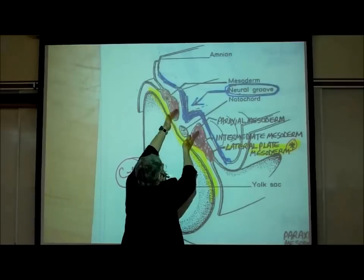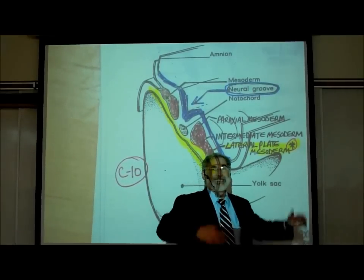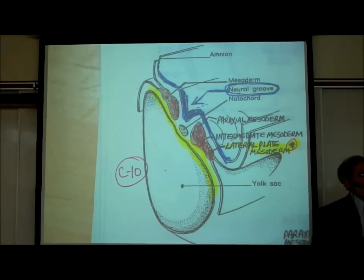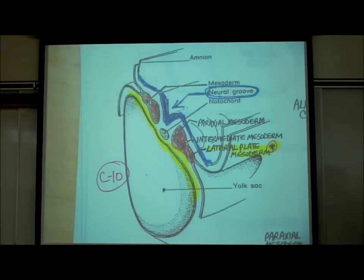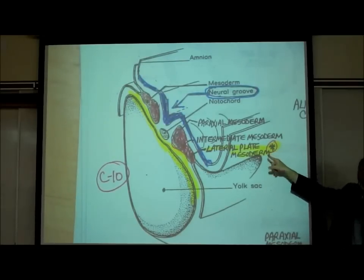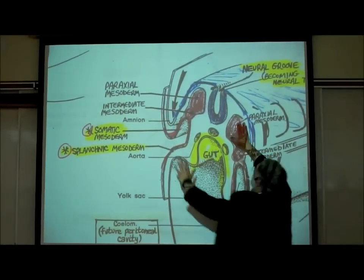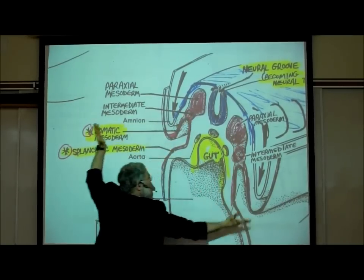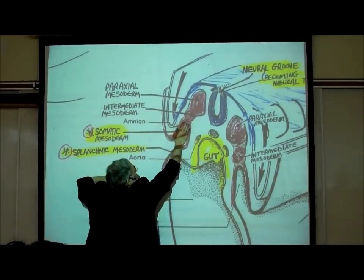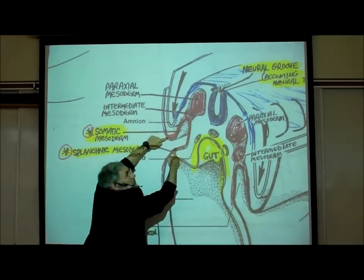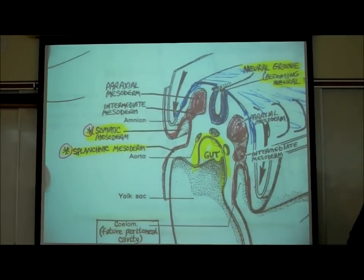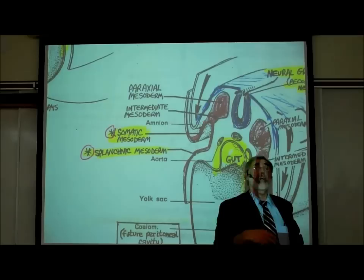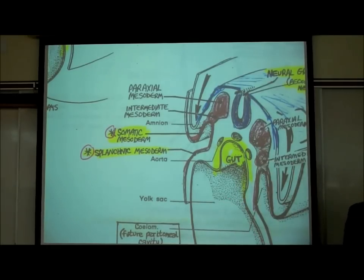Looking at the lower picture, I can still see the paraxial and intermediate mesoderm, but what happened to the lateral plate? It's divided — the lateral plate has become two things: somatic mesoderm and splanchnic mesoderm. These are going to become membranes — the peritoneal membranes in the abdomen and the pleural membranes in the chest. So this is the third week of development.